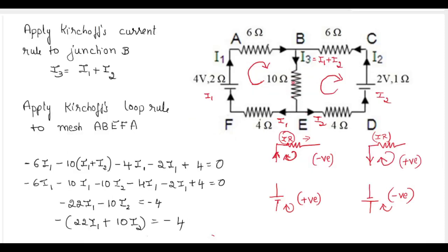Now let us use sign conventions. The direction taken is clockwise. If the direction of current and the direction taken are the same, the IR product is taken as negative. If they are in opposite directions, the IR product is positive. For the battery, if the direction goes from negative to positive terminal, the cell value is positive; if from positive to negative terminal, the cell value is negative.